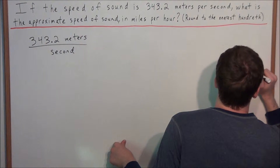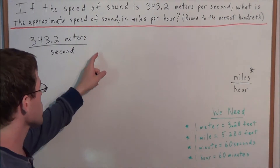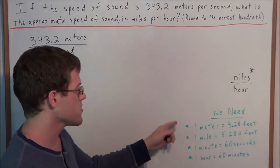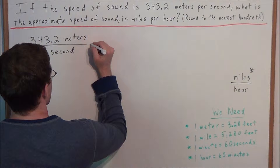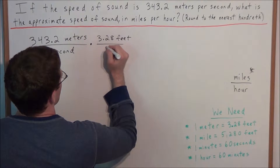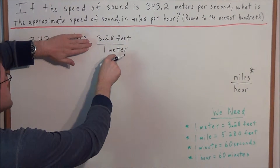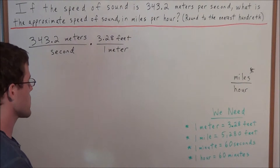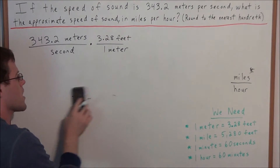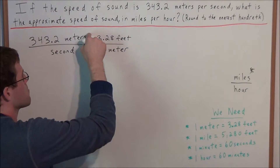When solving certain math problems it's a really good idea to set up what your final answer should look like so that you have something to work towards. We start with the fact that in 1 meter there are 3.28 feet. This conversion analysis part comes in because 1 meter equals 3.28 feet, so if we multiply by 3.28 feet divided by 1 meter, this fraction equals 1 because the numerator and denominator are of the same quantity — just like 3/3 or 5/5. I put meters in the denominator so they would cancel out with meters in the numerator.